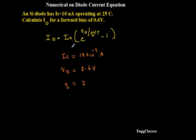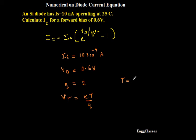Moving further, VT is not given but we need to find it. We know that VT is equal to KT divided by Q. T is the temperature in Kelvin, so T must be equal to 273 plus whatever the temperature is given in Celsius — that is 25 degrees. Therefore, T is equal to 298 Kelvin.